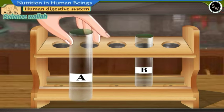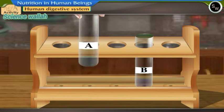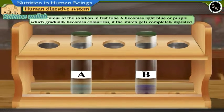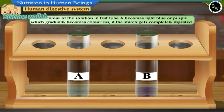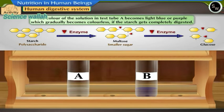Shake well and observe the color developed in the test tubes. The color of the solution in test tube A becomes light blue or purple which gradually becomes colorless if the starch gets completely digested.